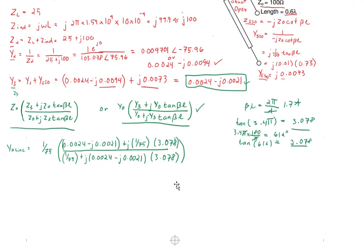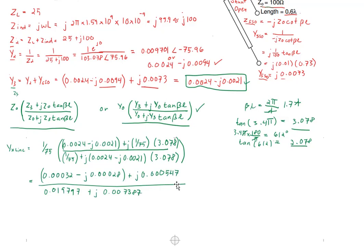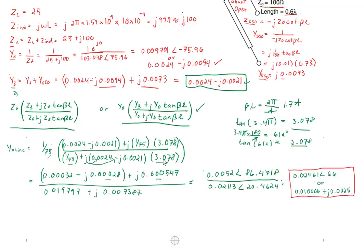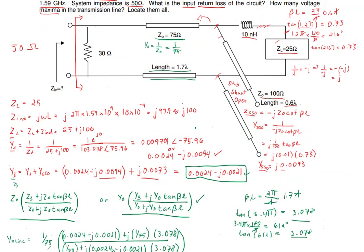Proceeding carefully: distribute the Y0 into the numerator, and on the denominator distribute j and multiply, then add. Adding the imaginary numbers, converting numerator and denominator to polar form, then dividing magnitudes and subtracting angles gives us the admittance for the entire network — transmission line, stub, and the two series components.